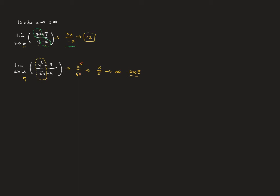When the degree is larger in the denominator, consider the limit as x goes to infinity of (3x + 7) over (4 − x²). The highest powers give 3x over −x², which simplifies to 3 over −x. As x gets very large, the denominator grows huge and 3 over −x approaches 0. So the limit is 0.